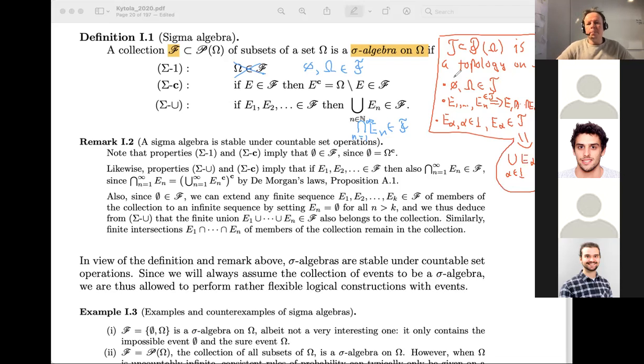If these three properties hold, then we actually call T a topology. Has somebody seen this definition?